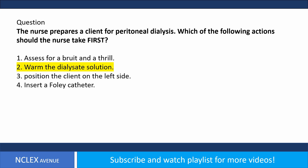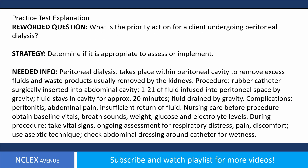Answer: Option 2 is correct. Reworded question: What is the priority action for a client undergoing peritoneal dialysis? Strategy: Determine if it is appropriate to assess or implement.